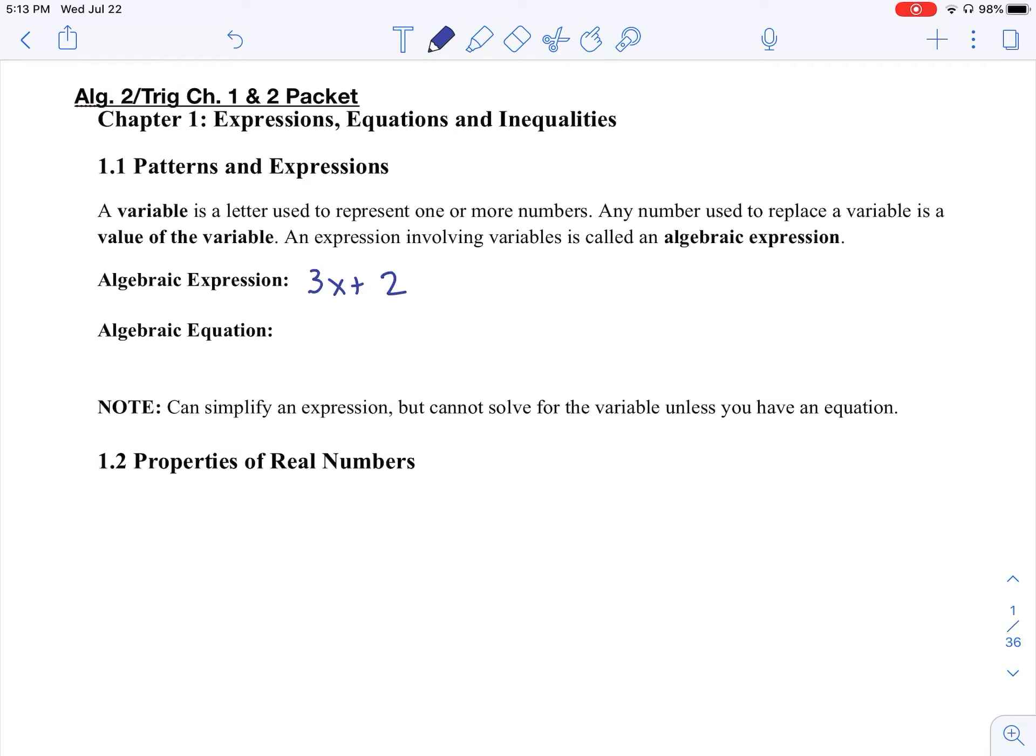An expression lacks an equal sign, where an equation would have two expressions set equal to each other. So it's a mathematical sentence that has two expressions set equal to each other. You can simplify an expression, but remember that you can't solve for a variable unless you have an equation. The key word in an equation is that you have an equal sign.